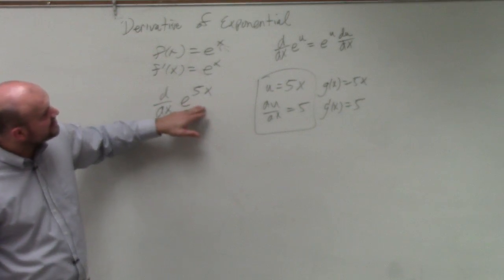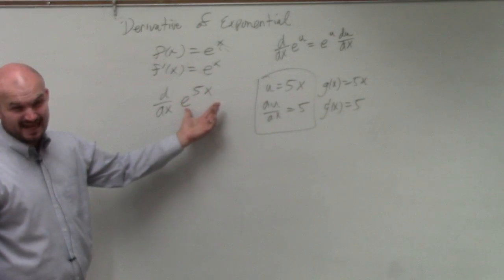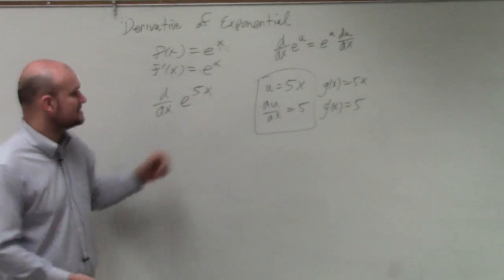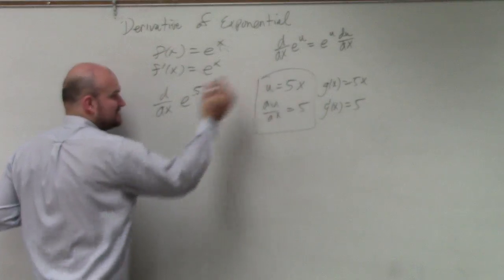So using the chain rule, you're going to take the derivative of your outside function, which is e to the x. The derivative of e to the x is e to the x of your inside function, which again is 5x.